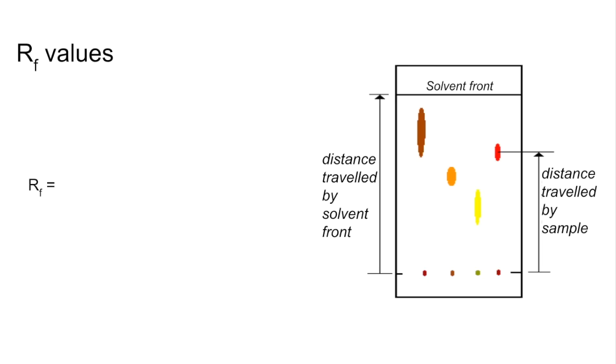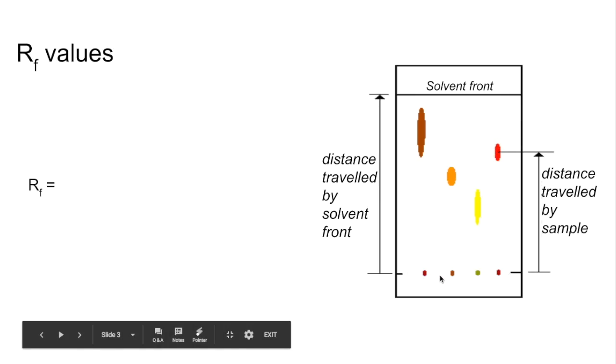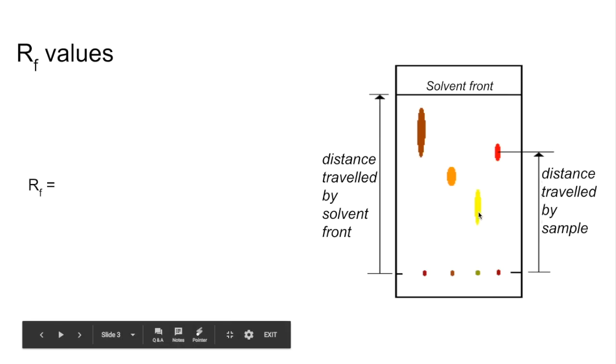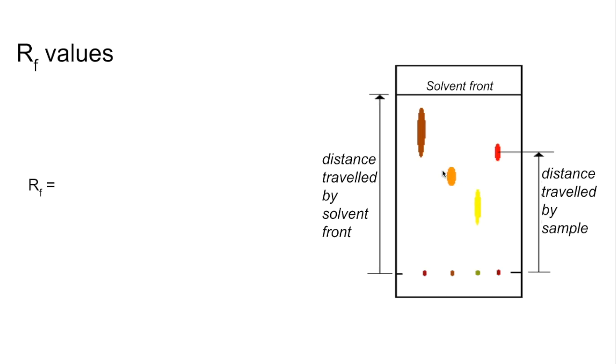Now for RF values. The TLC plate is shown front on. Your original sample would be here, and you'd normally draw a pencil line along the bottom. You can see the relative positions of the different spots. There's the distance traveled by the sample and the distance traveled by the solvent front. The RF value is the distance traveled by the sample divided by the distance traveled by the solvent front.